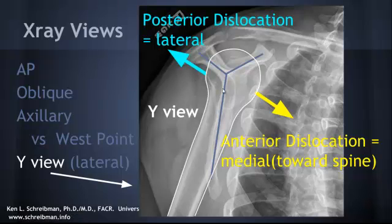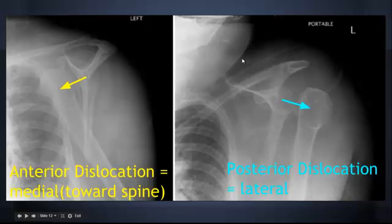One thing you can get confused about is which direction you're looking at. Remember that an anterior dislocation will be displaced more medially, toward the spine, while a posterior dislocation will be displaced laterally. Here's an example of each — you can see the anterior dislocation displaced medially toward the spine, and here's a posterior dislocation on the Y view that's more lateral.